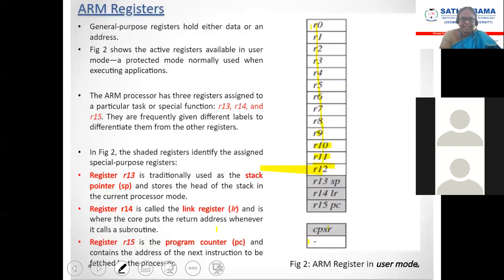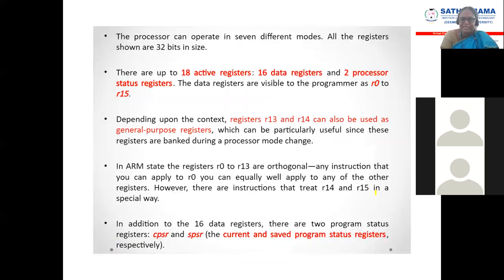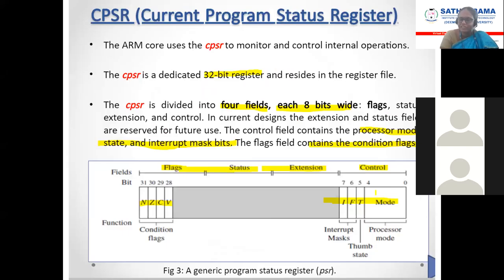This picture of ARM registers is very important. R0 to R13, R14, R15 — understand their purposes. CPSR means Current Program Status Register. In CPSR, the control field selects modes and interrupts, and it mainly handles the JASL or Thumb instruction set selection. The flag field handles conditional flags. Status and extension fields are reserved for future use — those remaining bits are allocated for future use, and only the control and flag fields are currently explained.